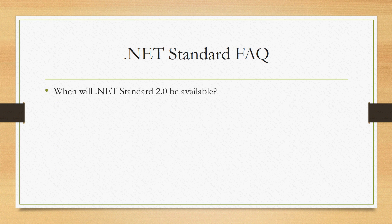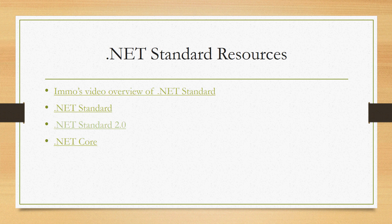We've talked a lot about .NET Standard 2.0 and the improvements coming in it — so when will it be available? Preview in Q2 of 2017, think mid-Q2, and then RTM in Q3. For further reading, Immo, the PM who built the apisof.net site, has a great YouTube series on different .NET Standard topics. You can check out the official documentation for .NET Standard and .NET Standard 2.0, and .NET Core documentation is linked as well. Hope this has been helpful. Thanks.